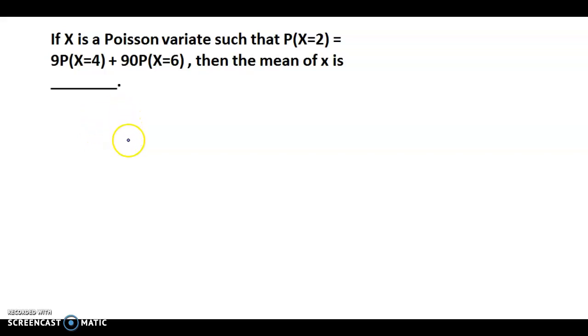Hello and welcome back. I am discussing an example from a Poisson distribution. If X is a Poisson variate such that P(X=2) = 9P(X=4) + 90P(X=6), then the mean of X is...